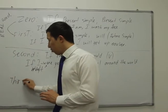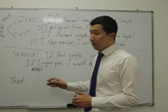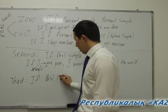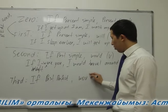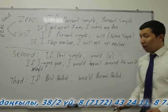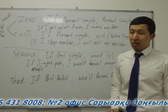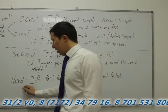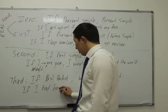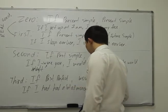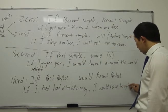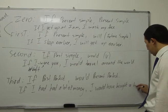And the last one: the third conditional. It is the most difficult, we call it a complex one. The formula is: if + past perfect, then would + present perfect tense. For example: if I had had a lot of money, I would have bought a big ship.